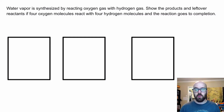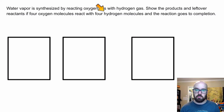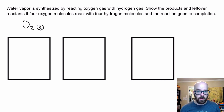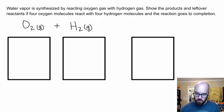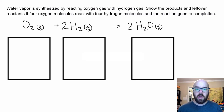Let's look at one more example combining a particulate diagram with limiting reactants. We start with a certain number of molecules of each reactant and see what's left once the reaction goes to completion. Water vapor is synthesized by reacting oxygen gas with hydrogen gas — both are diatomic. The balanced molecular equation is O₂(g) + 2 H₂(g) → 2 H₂O(g). We'll show the products and leftover reactants when four O₂ molecules react with four H₂ molecules.